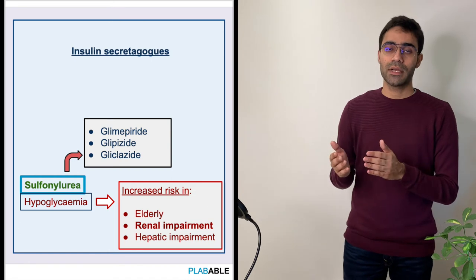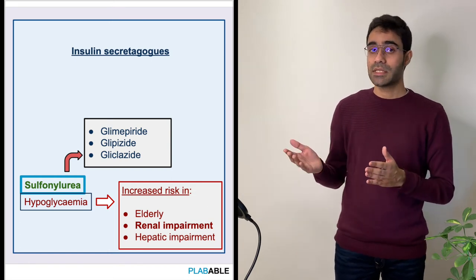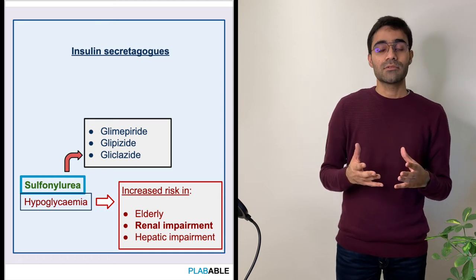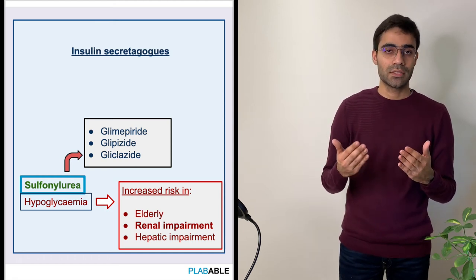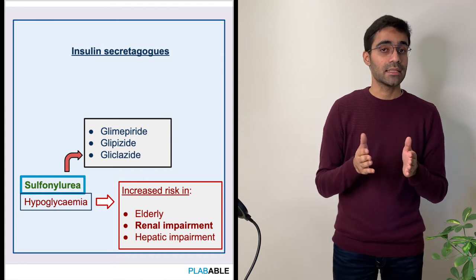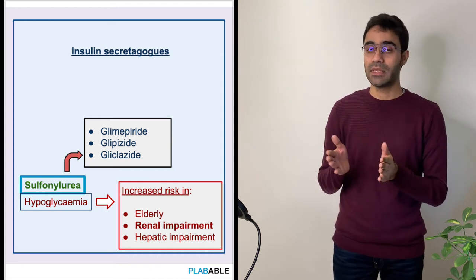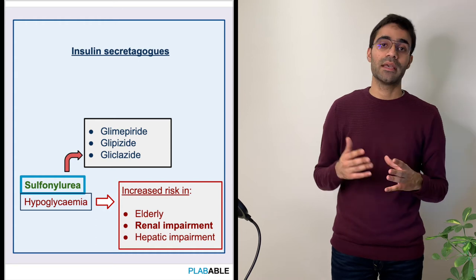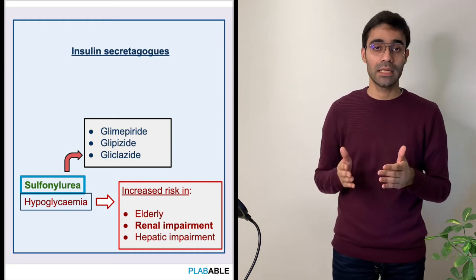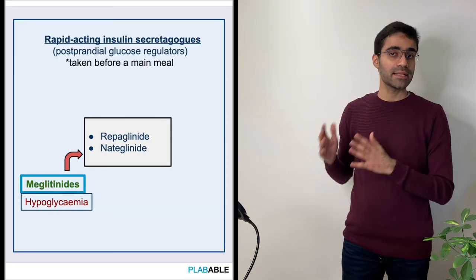Moving on to sulfonylureas — drugs like glipizide, gliclazide, or glimepiride. These drugs increase the secretion of insulin from the beta cells of the pancreas, and hence there is an increased risk of hypoglycemia with these drugs, particularly in the elderly, in patients with hepatic impairment, and especially in patients with renal impairment.